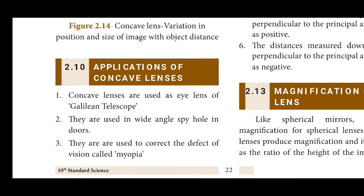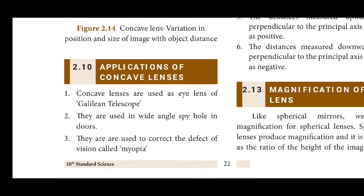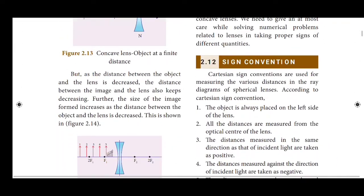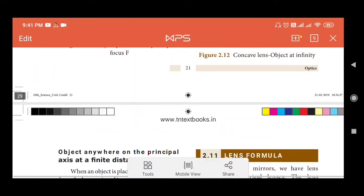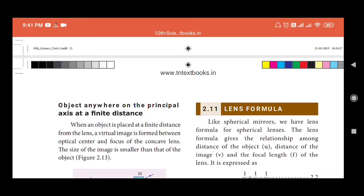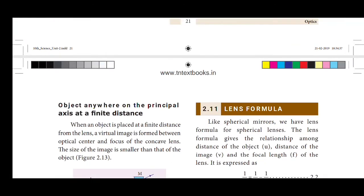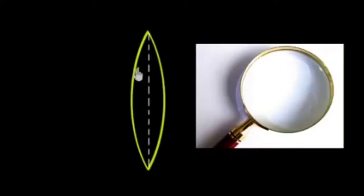The application of a concave lens is used in the Galilean telescope. It is also used for wide-angle peephole cameras in doors. Next, we will start the lens formula.